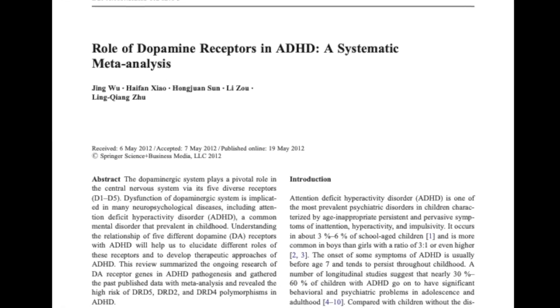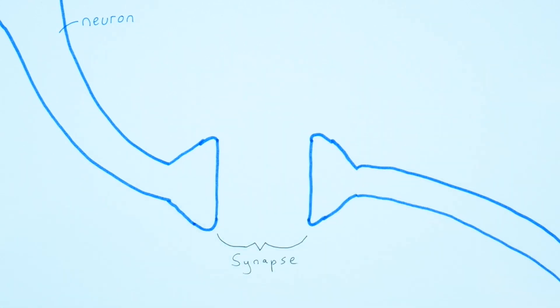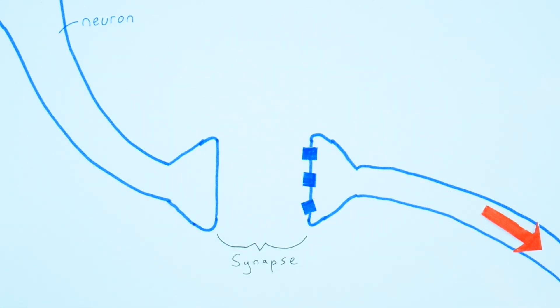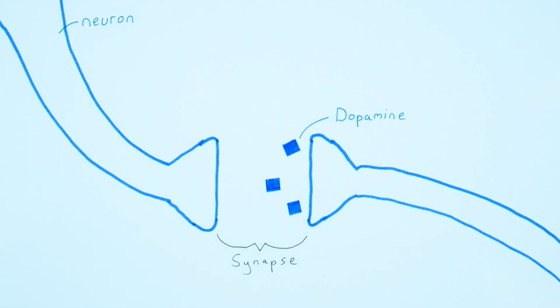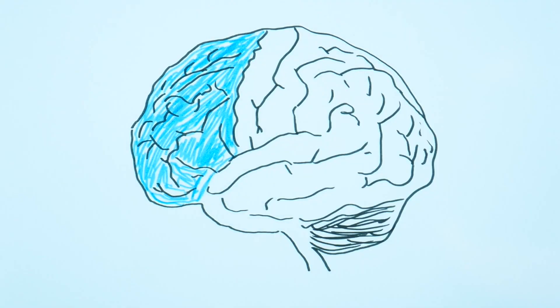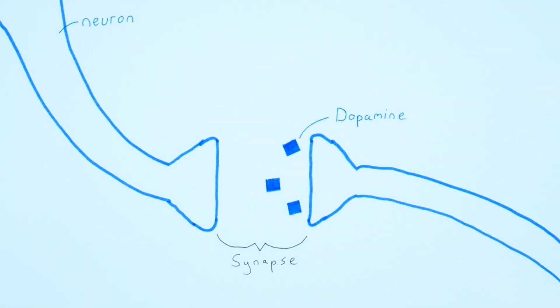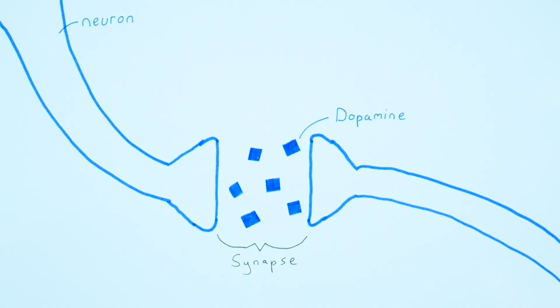Some talk about low levels of dopamine because in your brain you have neurons with a gap between them called a synapse. Neurotransmitters move signals between the neurons and a key player is dopamine. Certain regions of your brain, like the prefrontal cortex, are involved in reward and motivation and are affected by ADHD. In this part of the brain you have a lot of neurons that are highly responsive to dopamine. We also know that drugs which increase dopamine levels reduce symptoms of ADHD.